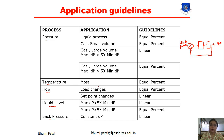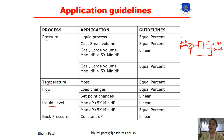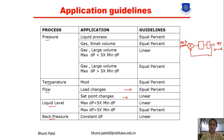The second application is load changes. The load is the final output of the system. If we continuously change the set point and still cannot get the desired output, we change the load of the flow system. For load changes, we use equal percentage characteristics, and for set point changes, we use linear characteristics.